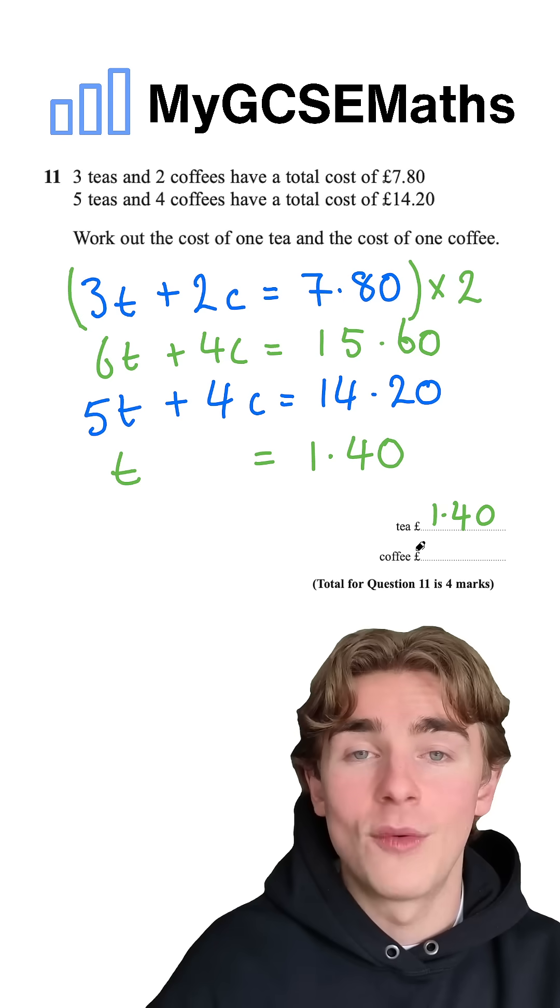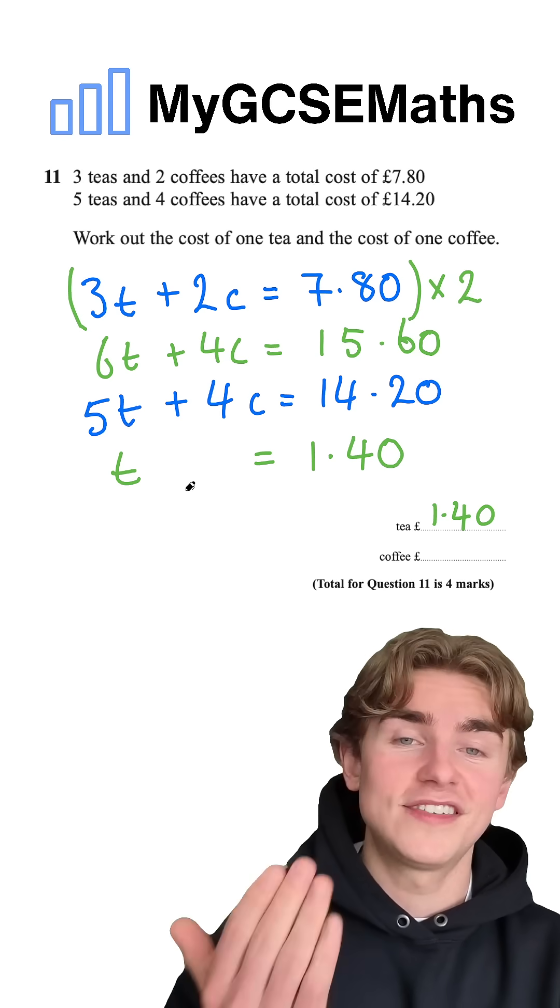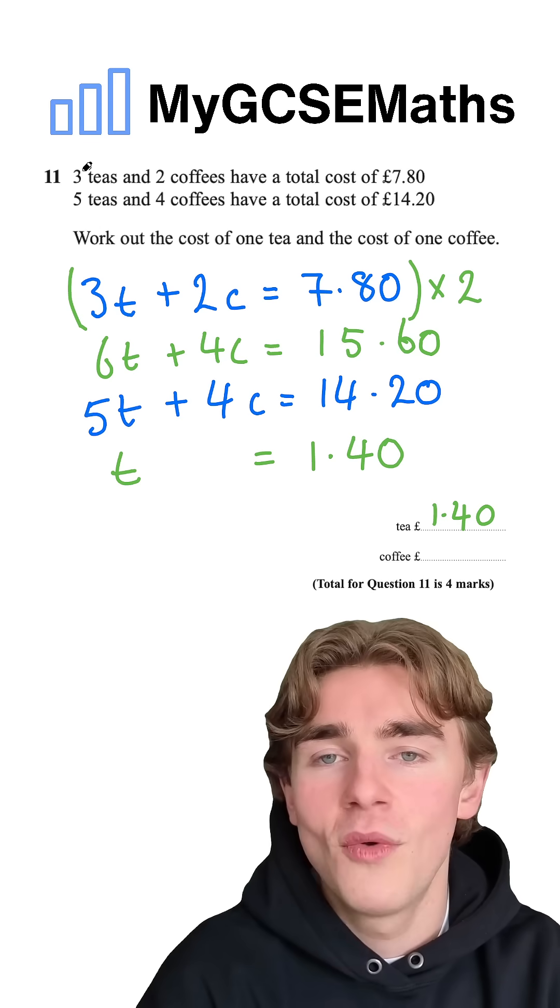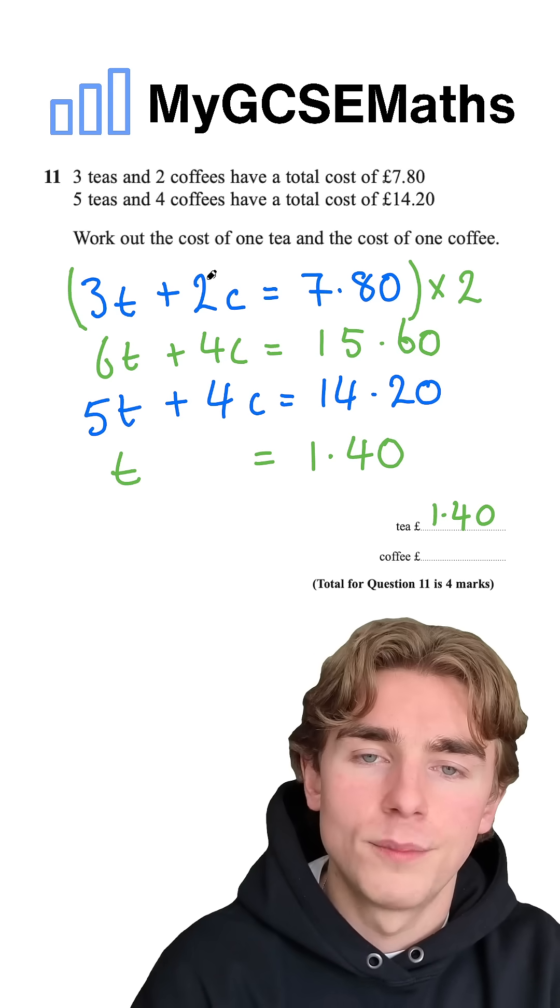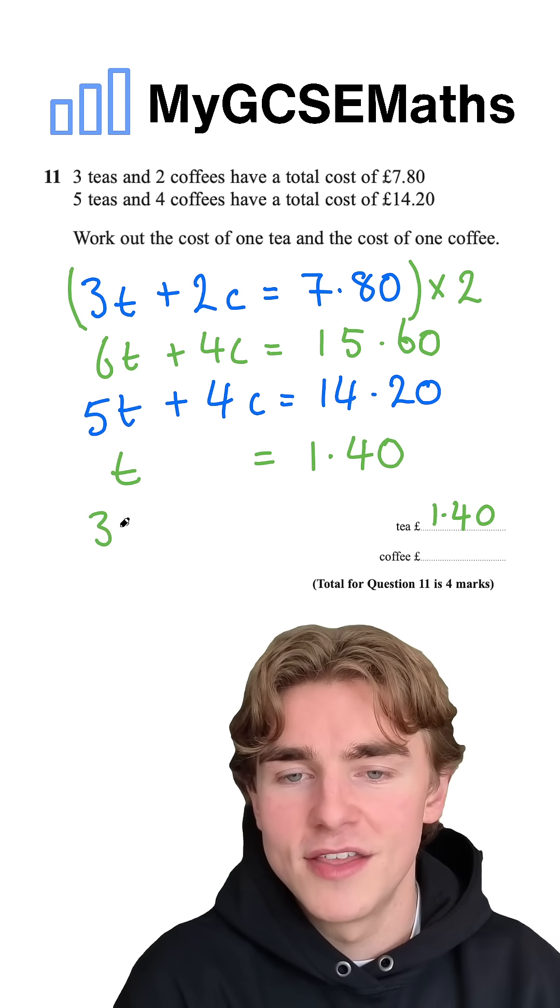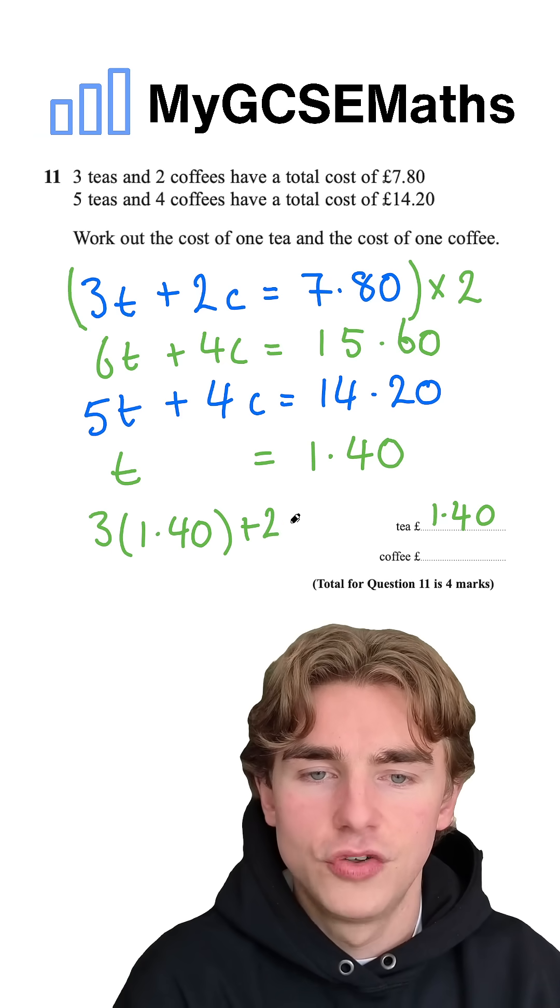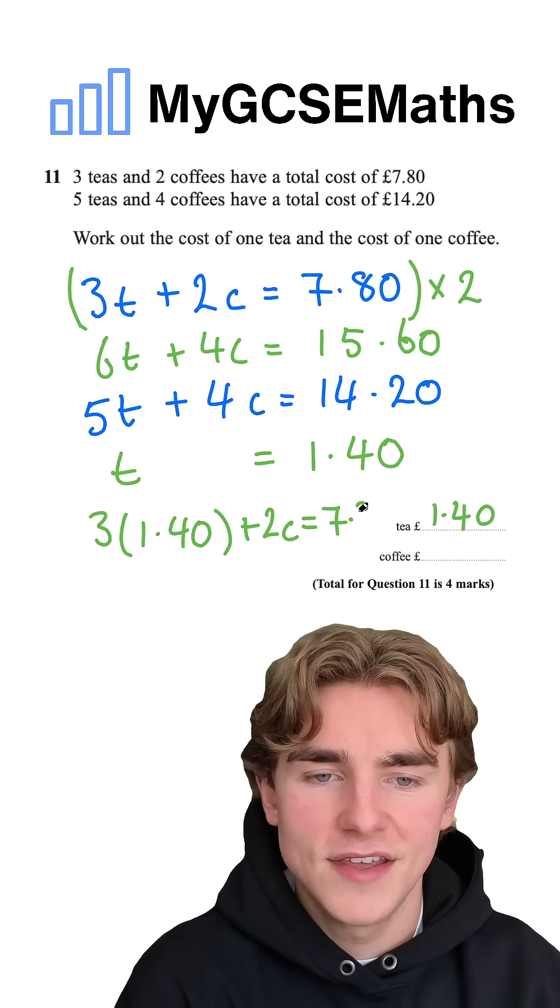But what about the value of our coffee? In order to get this, we're going to substitute our t back in and rearrange for c. Let's do it. We know that three t plus two c is seven pound 80. So we can say that three times one pound 40 plus two c is seven pound 80.